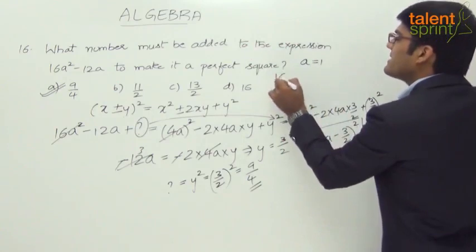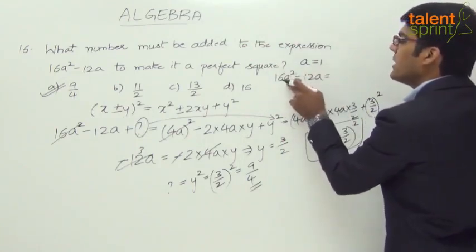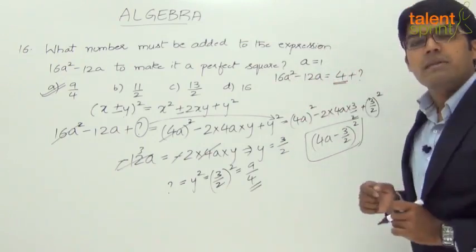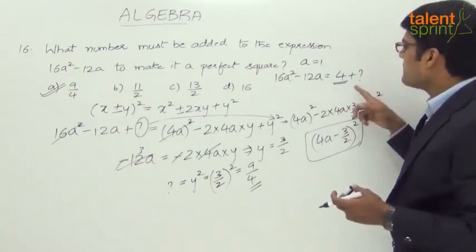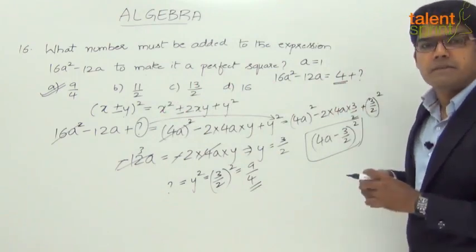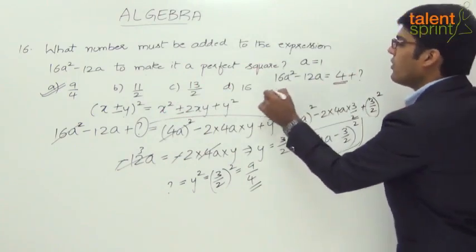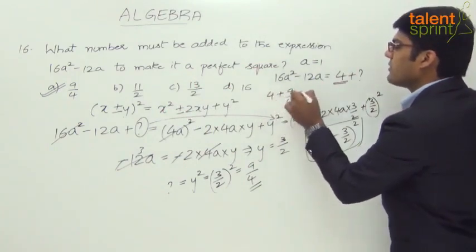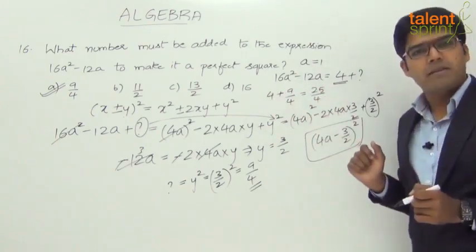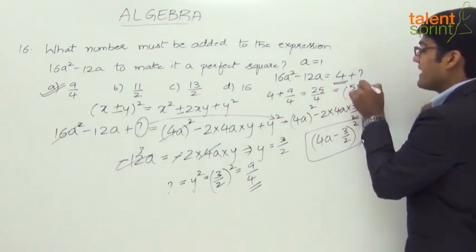With a = 1, 16a² - 12a = 16(1) - 12(1) = 4. So we need to find what must be added to 4 to make it a perfect square. Let's test option A: 4 + 9/4 = 16/4 + 9/4 = 25/4. Is 25/4 a perfect square? Yes — it equals (5/2)². So 9/4 is the correct answer.